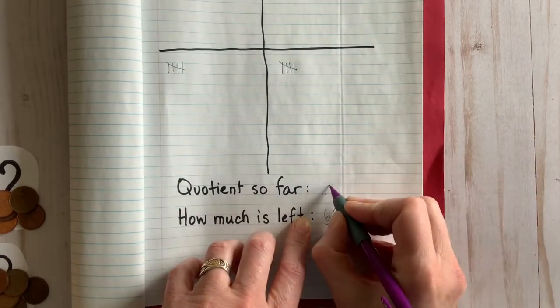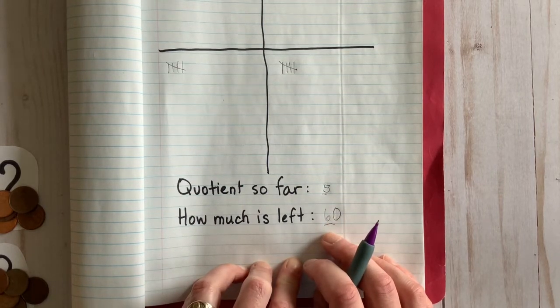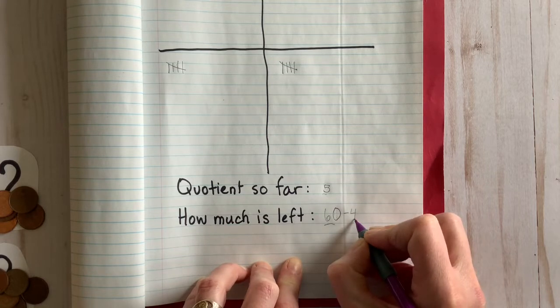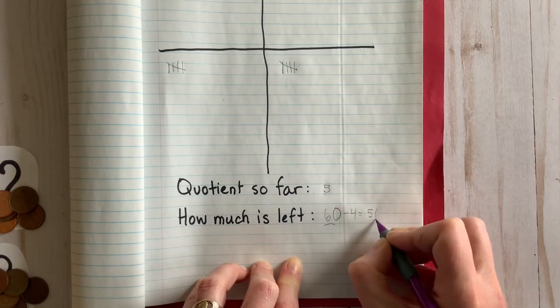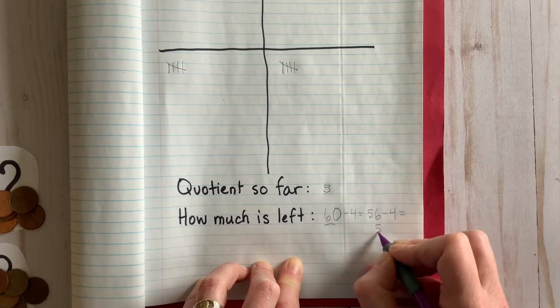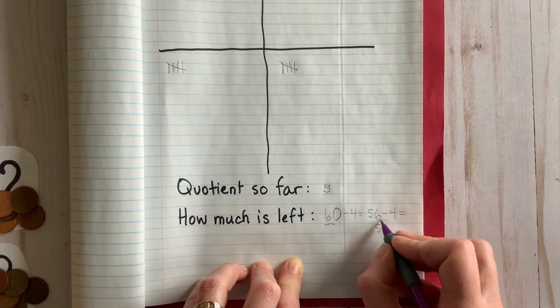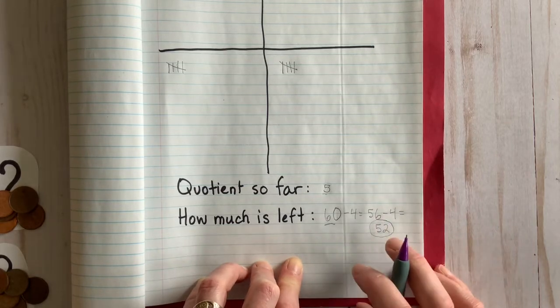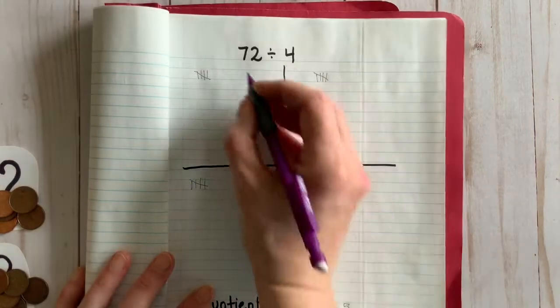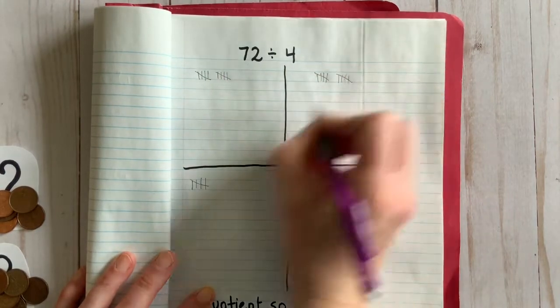Okay, here's our first idea: how about we use up more than one at a time? Let's try two. Now our quotient is five. How much is left? Watch and see if this makes sense to you. I took away two groups of four that time, right? Two groups of four is eight, and when you subtract that leaves us with 52.